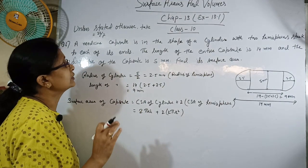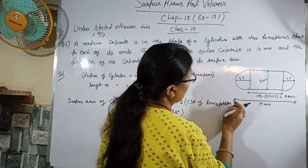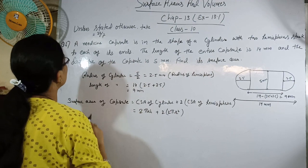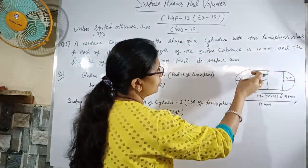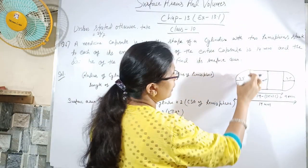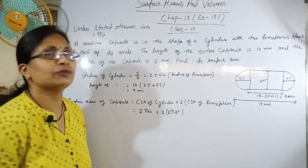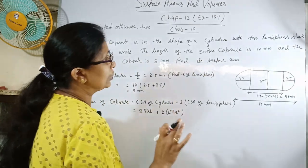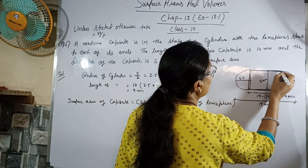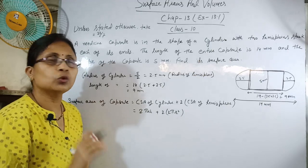The length of the entire capsule is 14 mm. पूरे capsule का length, यहाँ से यहाँ तक, 14 mm है। And the diameter of the capsule is 5 mm — मतलब यहाँ से यहाँ तक का जो length है वो 5 mm है। यह दो figures से बना हुआ है — एक cylinder है इस part में, और दूसरा hemisphere है जो दोनों sides पर attached है। दोनों hemispheres equal हैं।